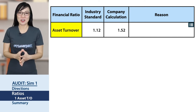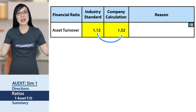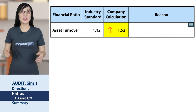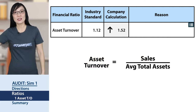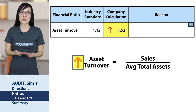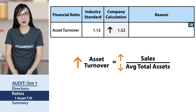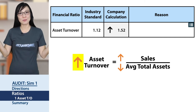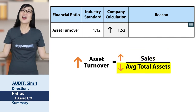Starting with asset turnover: industry standard 1.1, company's calculation 1.5. The company's number is higher. To figure out why, break down the ratio: asset turnover equals sales divided by average total assets. The company's number is higher than the industry standard, so from a basic math viewpoint, either the numerator is higher or the denominator is lower. That means either the company had higher sales or lower assets.